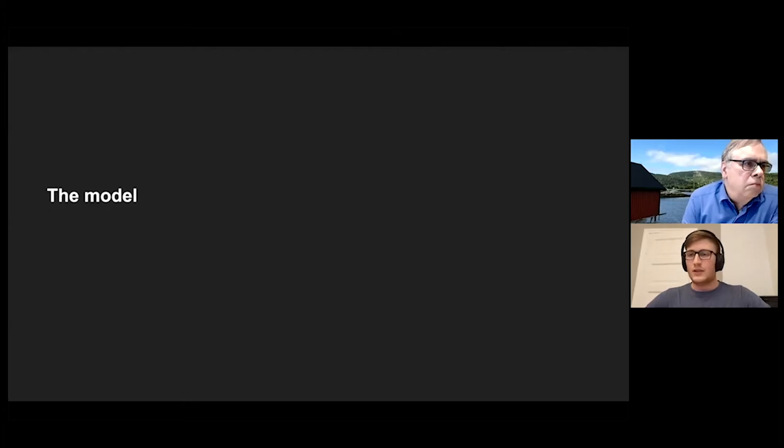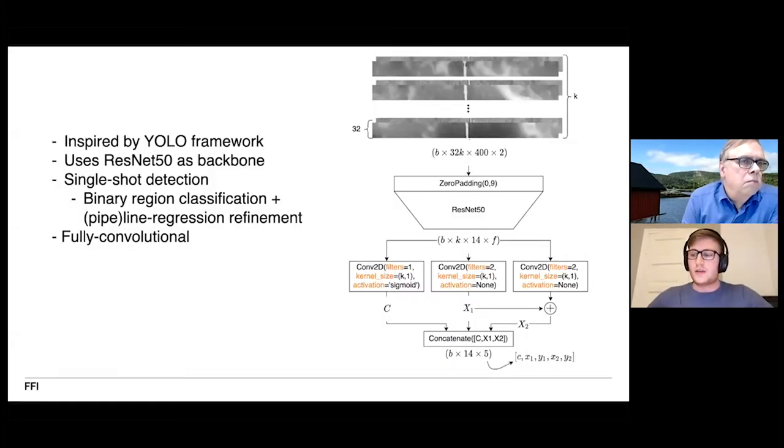Let's quickly look at our model. Our model is heavily inspired by the single shot detection framework such as YOLO and uses the ResNet-50 as a backbone architecture. The way we are able to use this model is by considering 32 ping image segments as input to it, and then we want to ask the question: are there seafloor pipelines within these image segments and if so where are they? This resembles a lot of the mainstream object detection models but there are some differences.